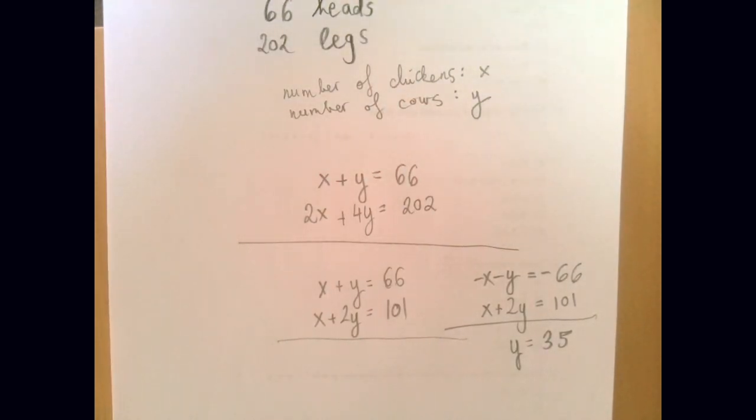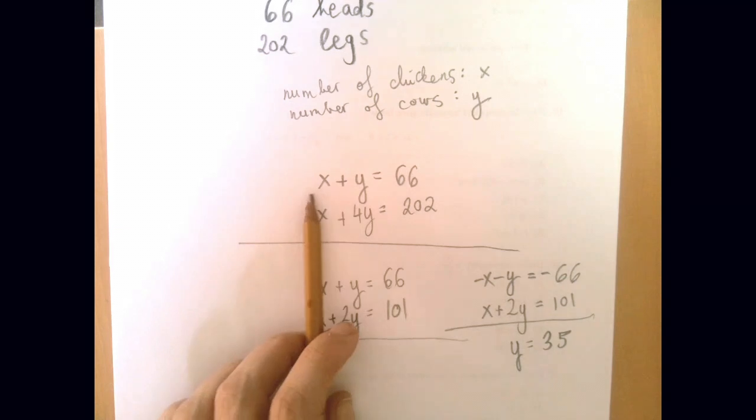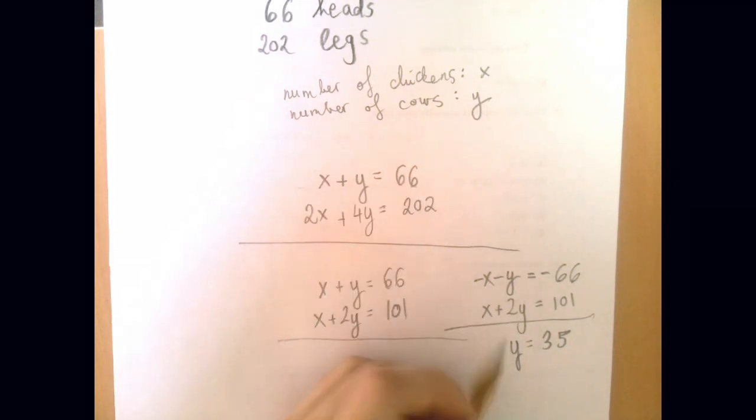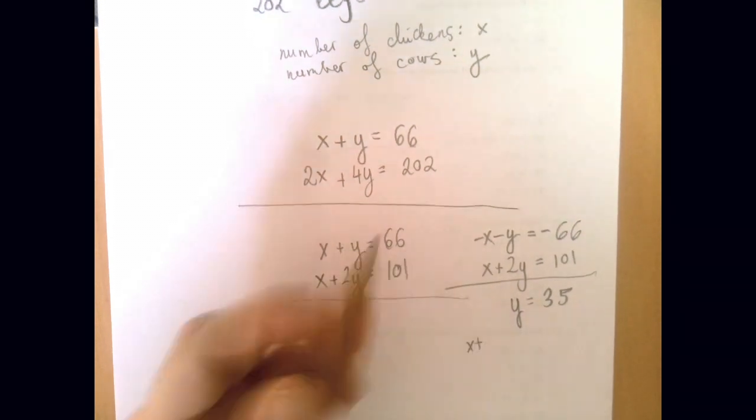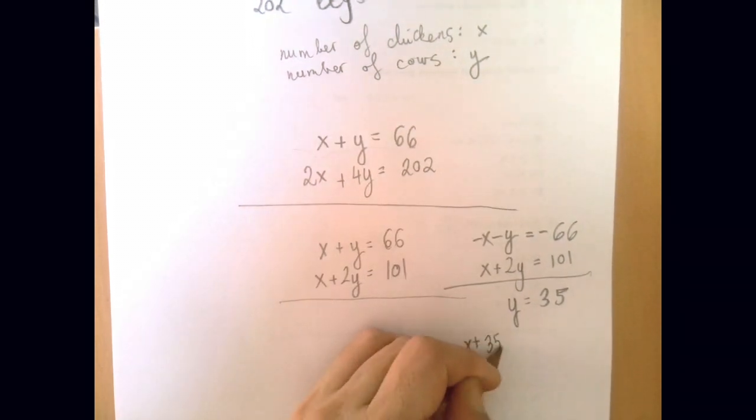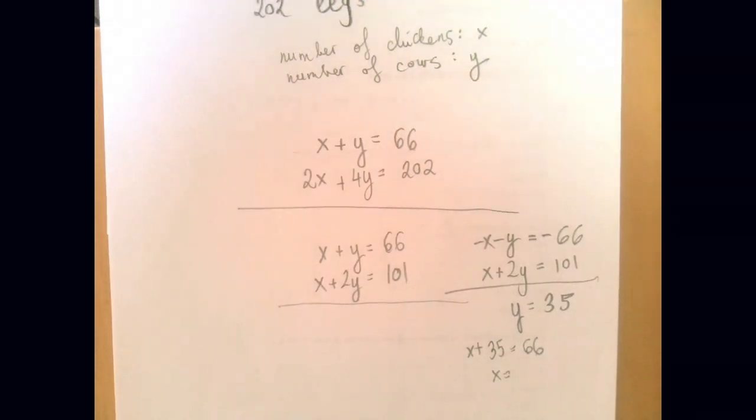Now for x, we could go back to either the text of the problem or the simpler equations. Let's just go for x plus y equals 66. So then x plus, now we know, or think we know that y is 35. And so x is whatever 66 minus 35 is, it's 31.